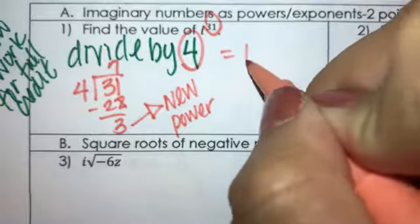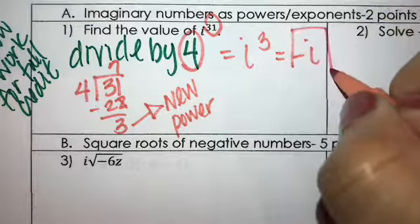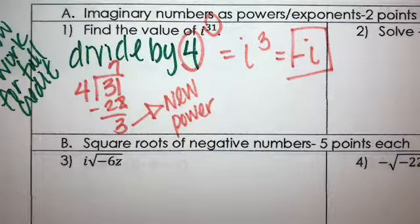So it equals i to the 3rd power, which equals negative i. That's the solution for number 1.